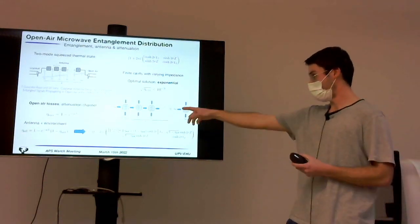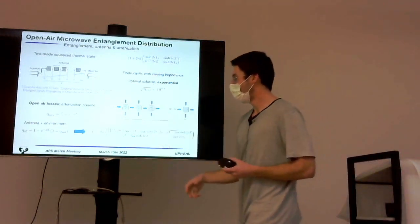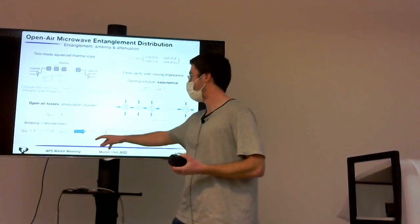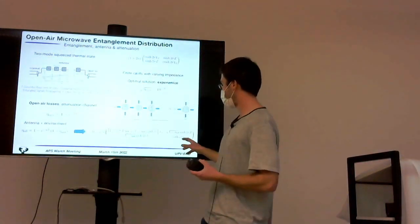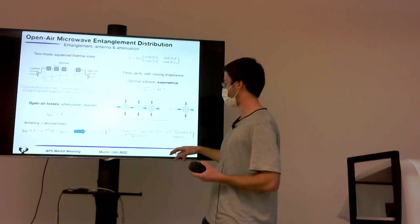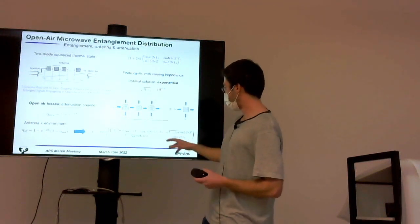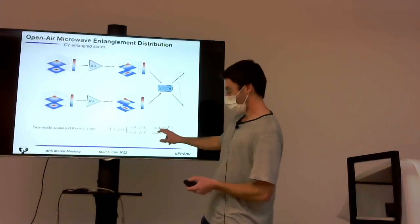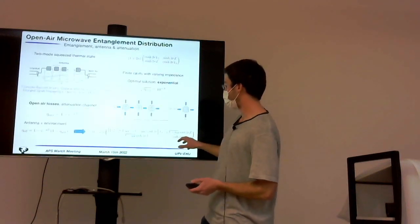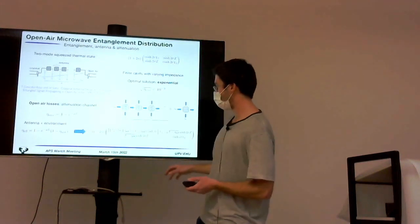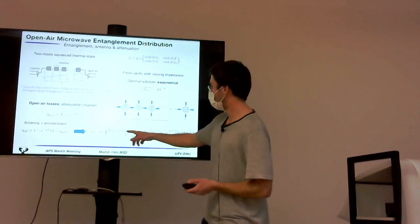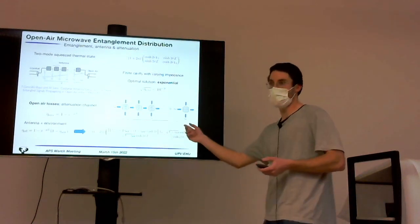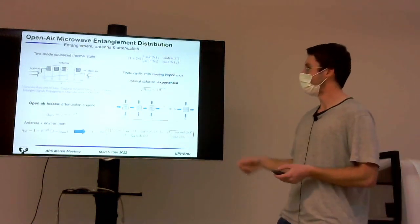So the combination of those two beam splitters leads to total reflectivity that will characterize photon losses and thermalization of the state, and affects the covariance matrix in this way. This process is also Gaussian preserving. And here we're assuming that we have one of the modes. You see this mode is kept inside the cryostat, and this one is sent through open air, and is mixed with the thermal environment. And this is how the correlations, the off-diagonal elements, degrade because of this interaction.